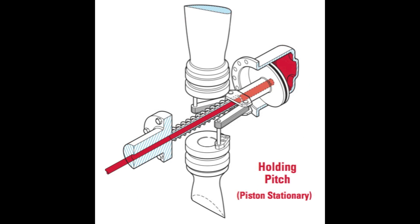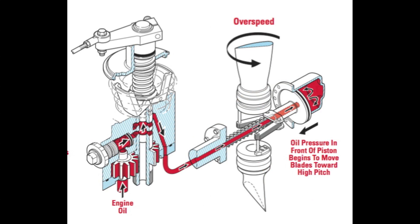When the desired engine RPM setting has been reached, a state of equilibrium is reached where no oil is pumped into, nor is any oil drained from the propeller. If any condition of flight changes this equilibrium — such as if we push the nose down and increase the airspeed — the RPM of the engine will begin to increase, and the governor causes the system to pump more oil into the dome, thus increasing the pitch of the propeller.